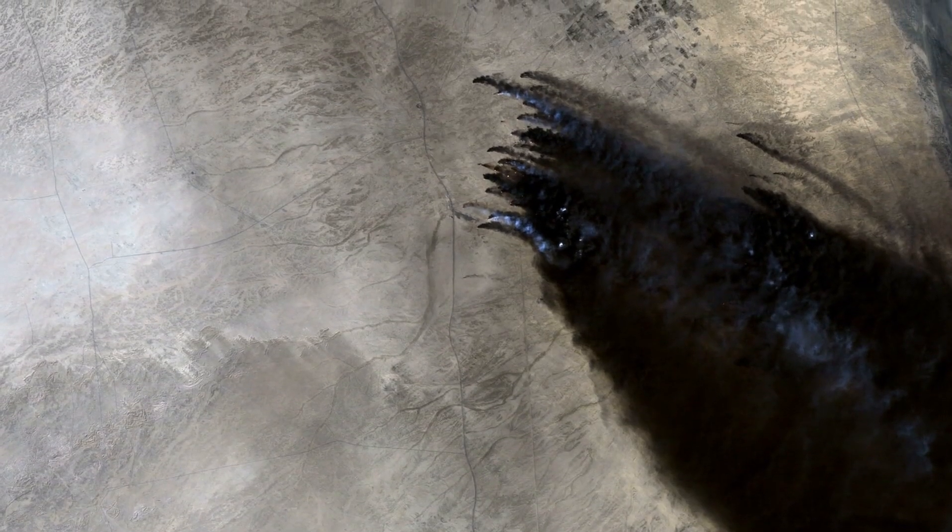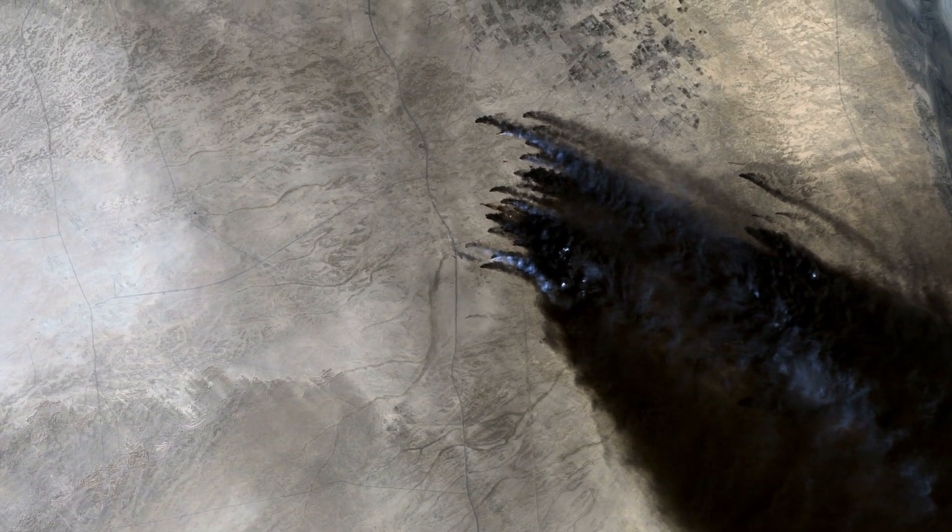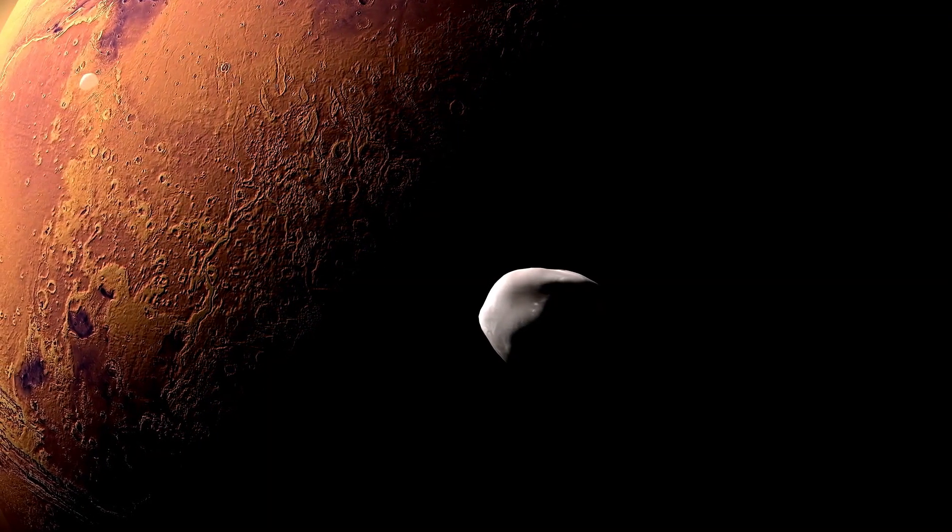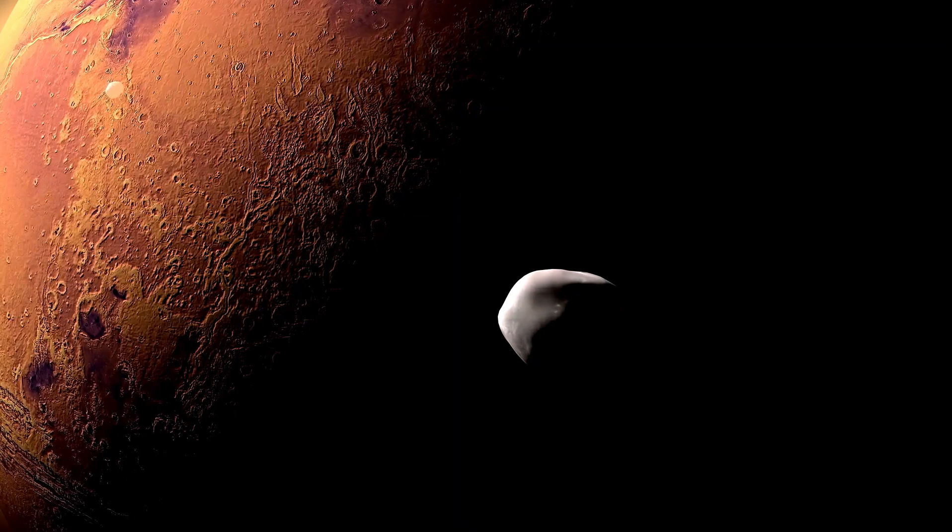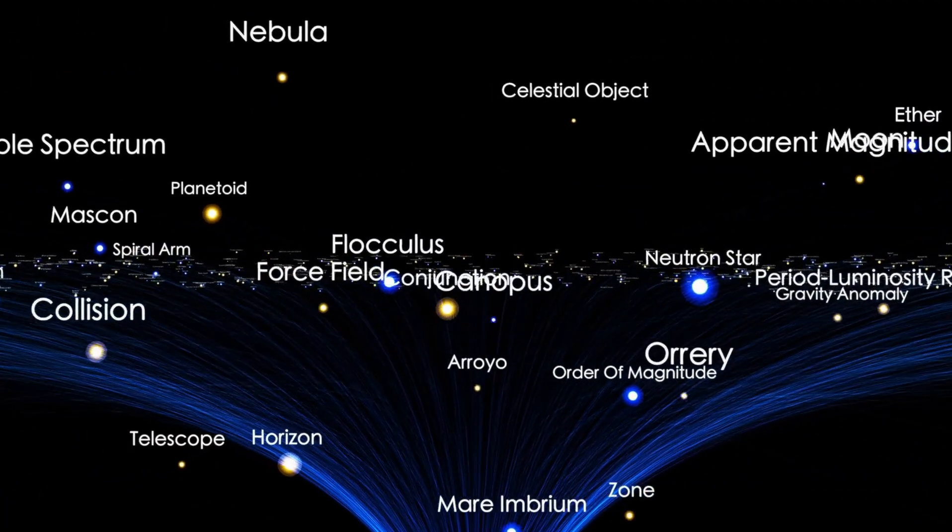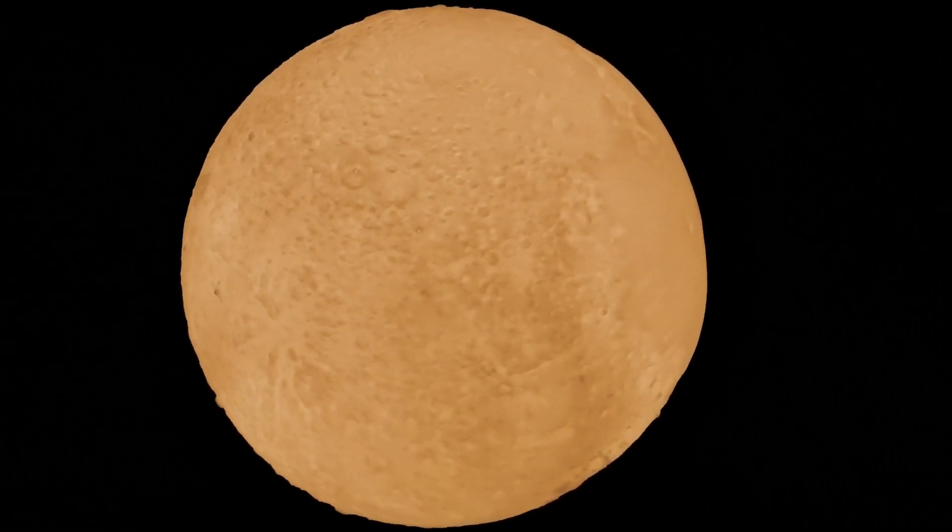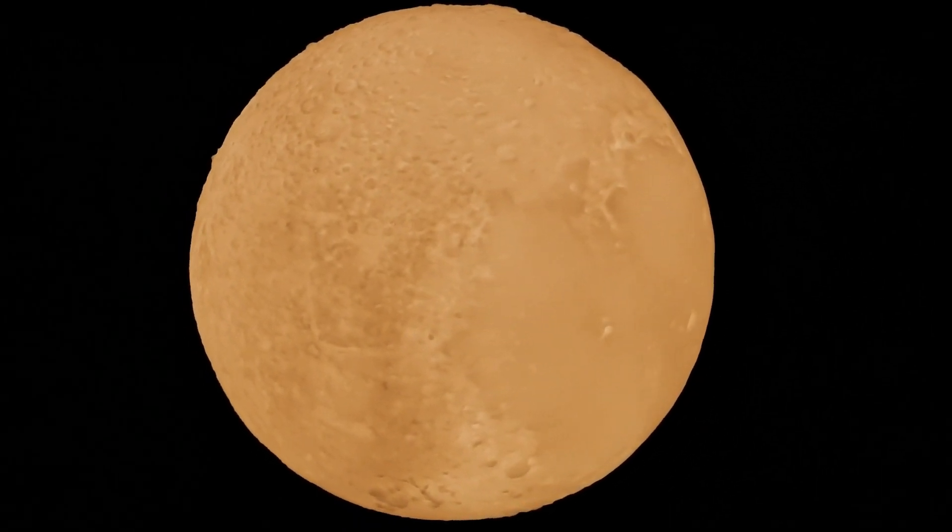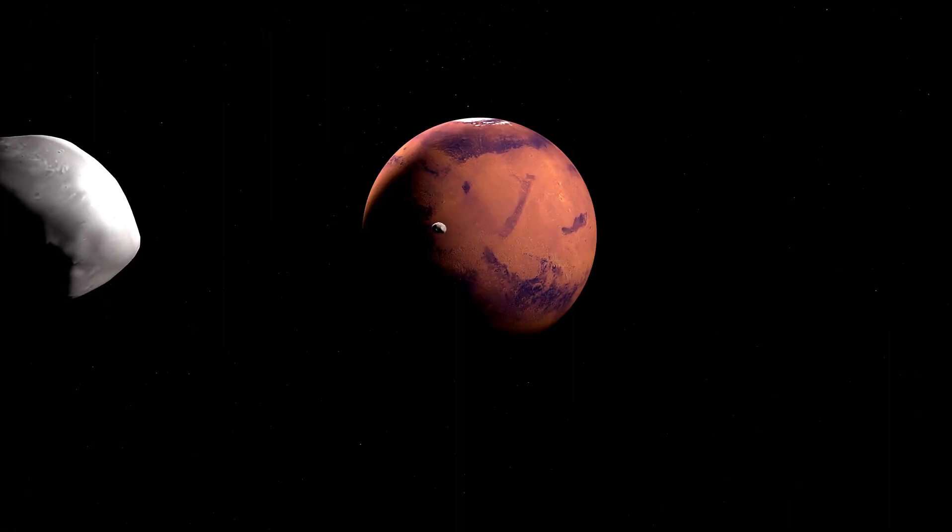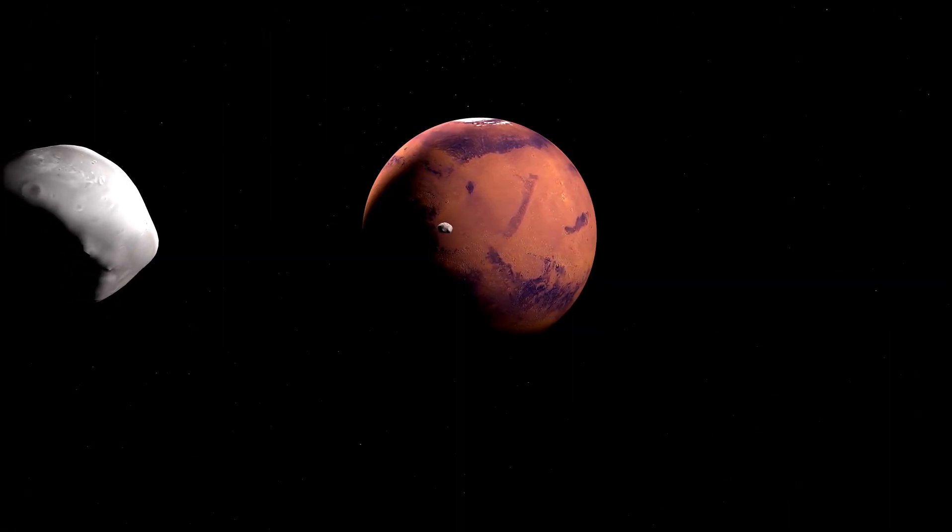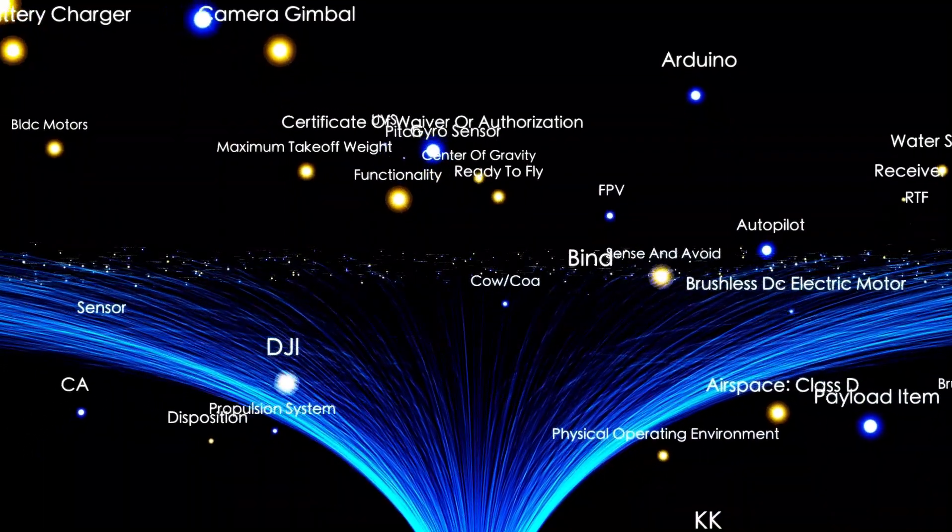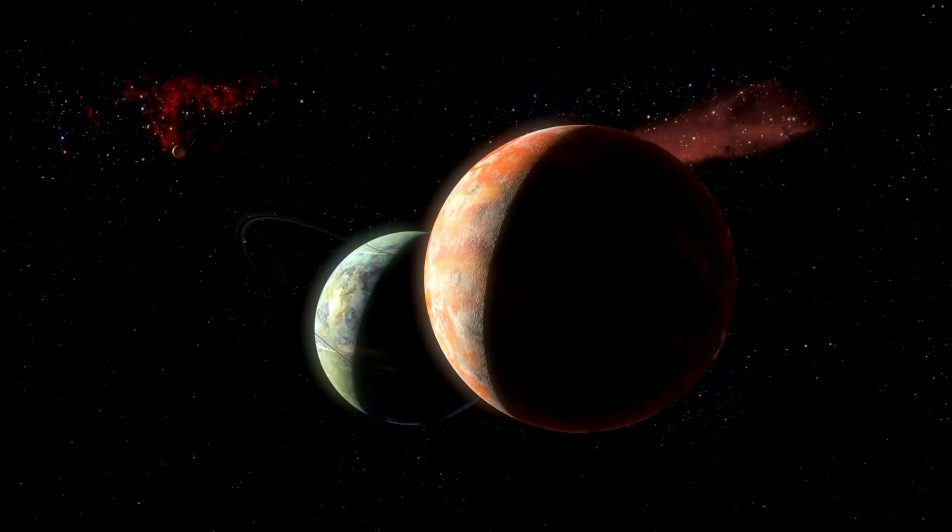As we leave the inner planets behind and approach the first of the gas giants, we encounter the asteroid belt, a fascinating region filled with objects worth studying. Among them is the curious asteroid 6478G, which clearly resembles a comet with its twin tails. This asteroid resides in the asteroid belt and was imaged in 2019. So why does it have a tail?